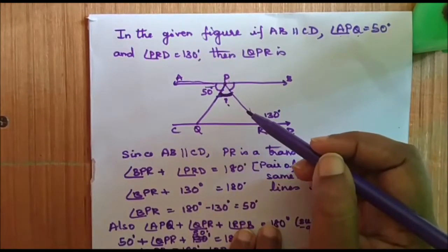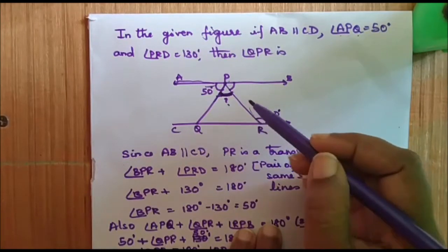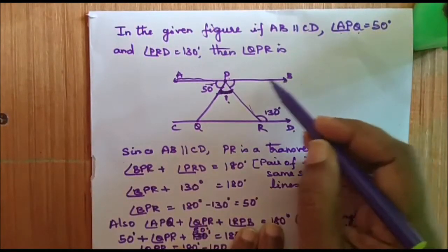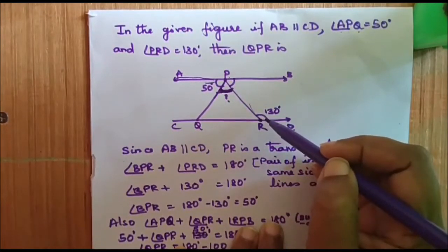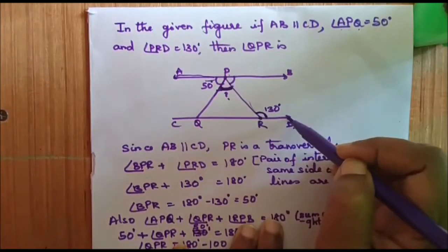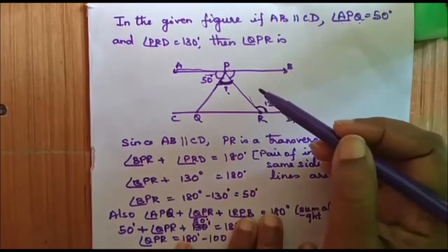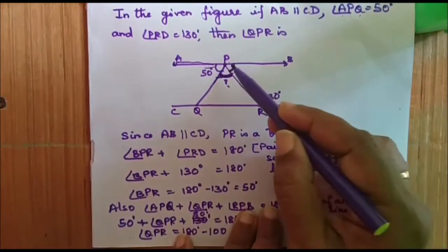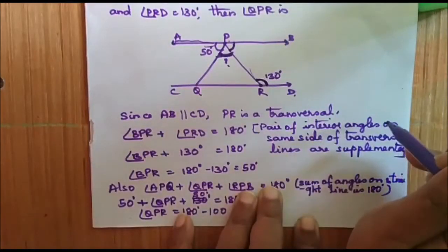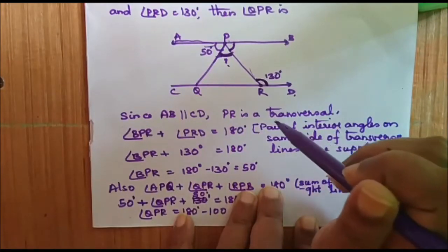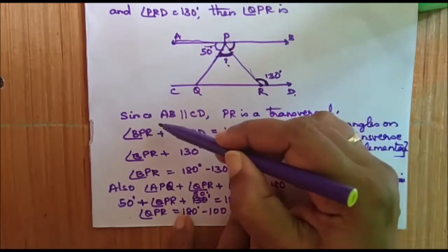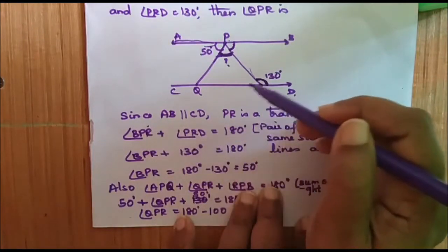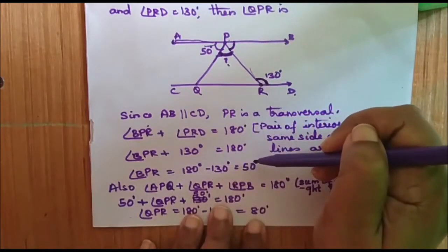We know that line AB is parallel to line CD and PR is a transversal. Angle BPR and angle PRD are interior angles on the same side of the transversal, so they are supplementary. Therefore, angle BPR plus angle PRD equals 180 degrees. Since PRD is 130 degrees, angle BPR equals 50 degrees.